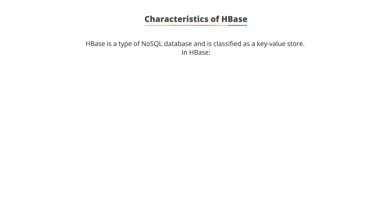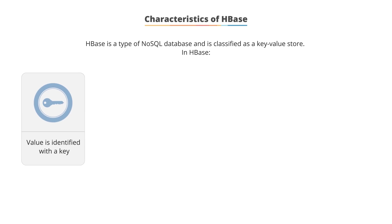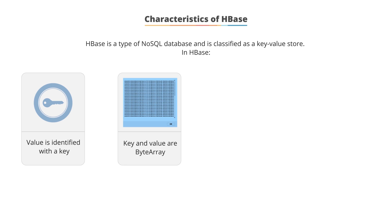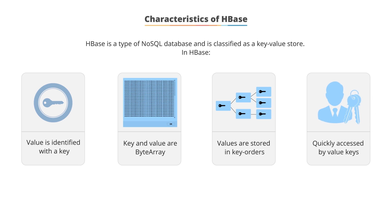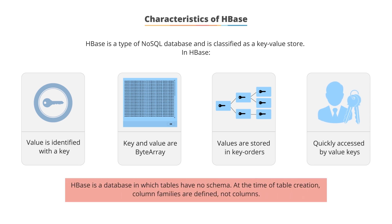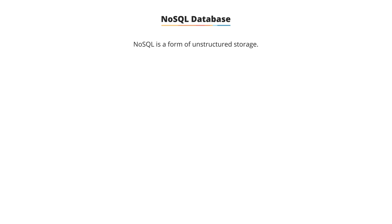What are some of the characteristics of HBase? HBase is a type of NoSQL database and is classified as a key-value store. Values are identified with a key. Both key and values are byte arrays, which means binary formats can be stored easily. Values are stored in key order and can be quickly accessed by their keys. It represents a database in which tables have no schema. Column families and not columns are defined at the time of table creation. NoSQL is a form of unstructured storage — NoSQL databases do not have a fixed table structure, like the ones found in relational databases.